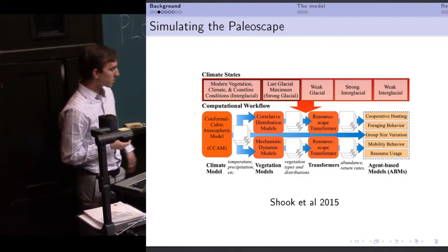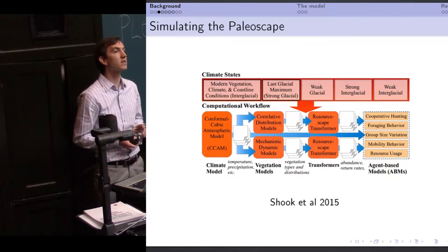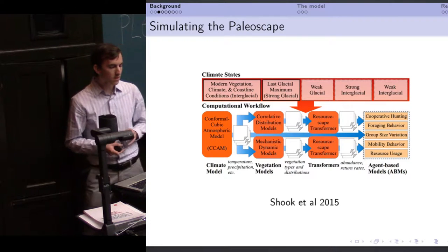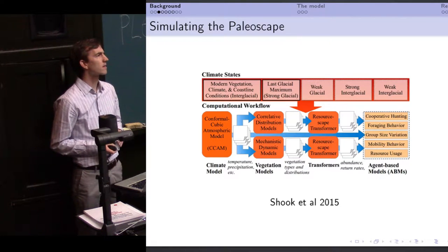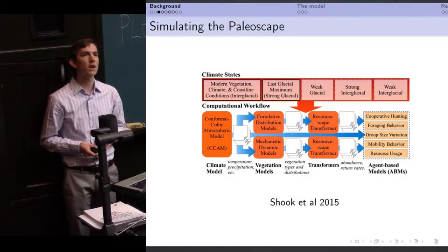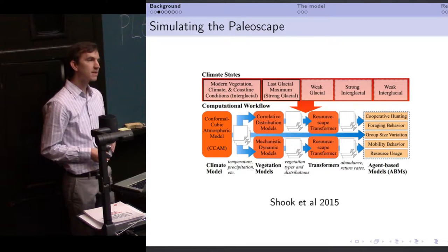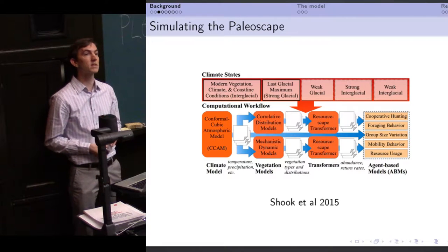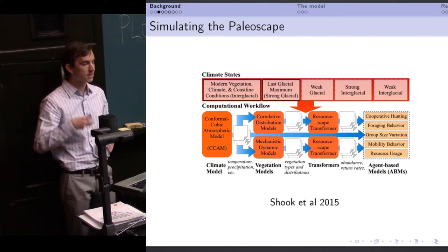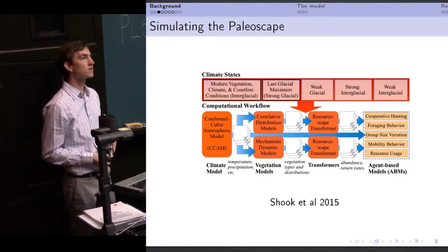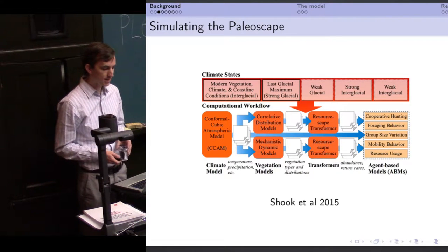So where do we actually start out with this? Well we have a very, our paleoscape simulation project is much larger than just my component. We begin with global climate models on the left there. These things running on supercomputers, trying to reconstruct the climate in both glacial and interglacial phases. This is then piped into a vegetation model that predicts what the distribution of different habitats were on this landscape in these different time periods. That then turns into kind of resource landscape for the agent-based modeling, which is where I come in in this last stage.